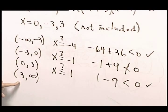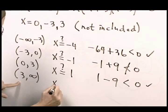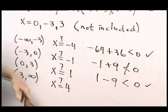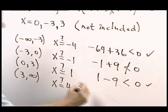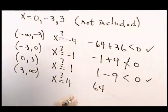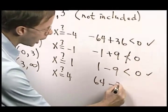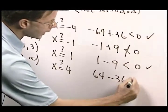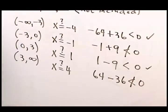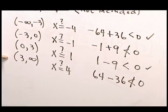This, try to take a value from here. x. Does 4 work? Substitute it in and see. 4 cubed is 64 minus 9 times 4. That is not less than 0. So this interval is not part of my solution.